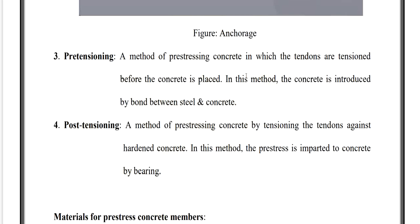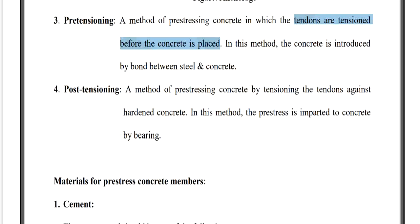Tendon and anchorage are the two key terminologies. Next are pre-tensioning and post-tensioning — the two methods we are going to study in detail. Pre-tensioning is a method of pre-stressing concrete in which the tendons are tensioned before the concrete is placed. Before concrete is placed, stresses are induced in the tendons.